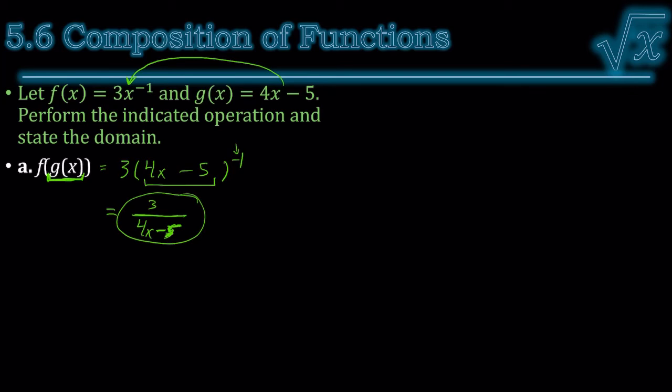Let's try another. This time, function f is in the middle. So that means function f is being plugged in for x on function g. Function g is 4 times x minus 5. But x is replaced with function f. Function f is 3 times x to the negative 1.